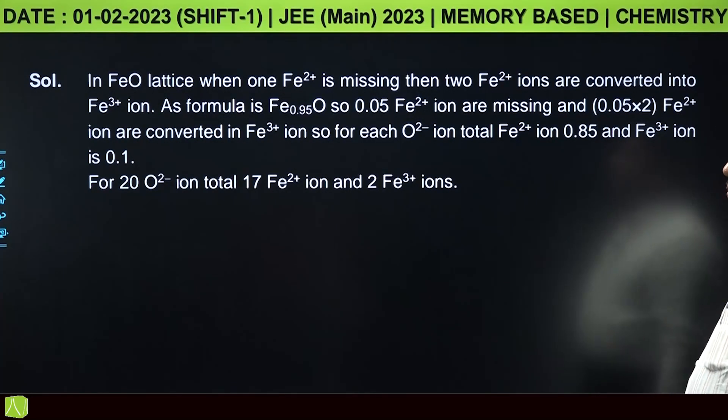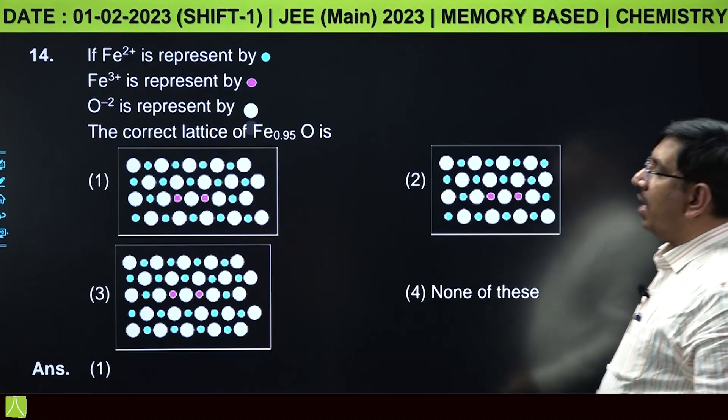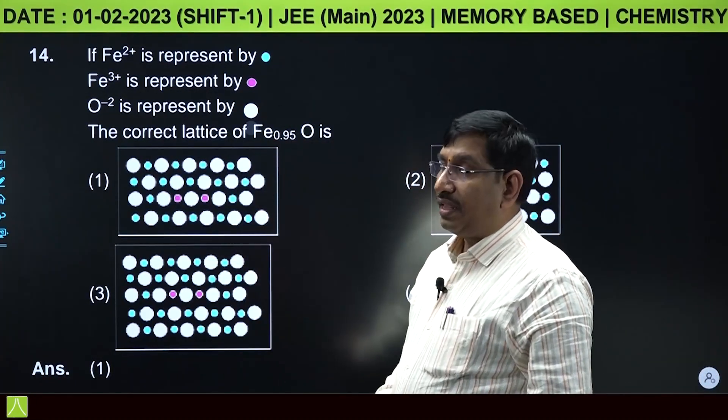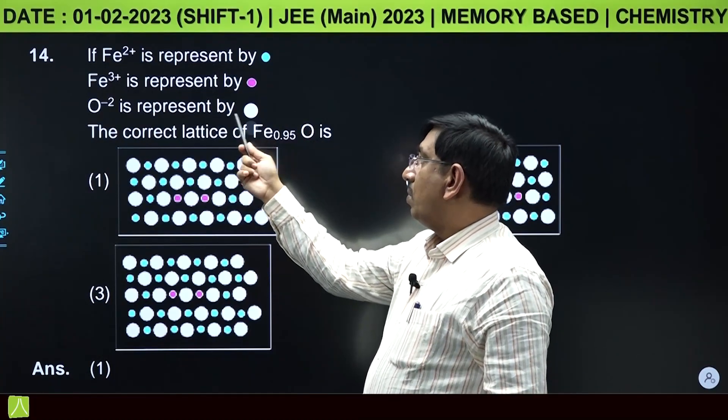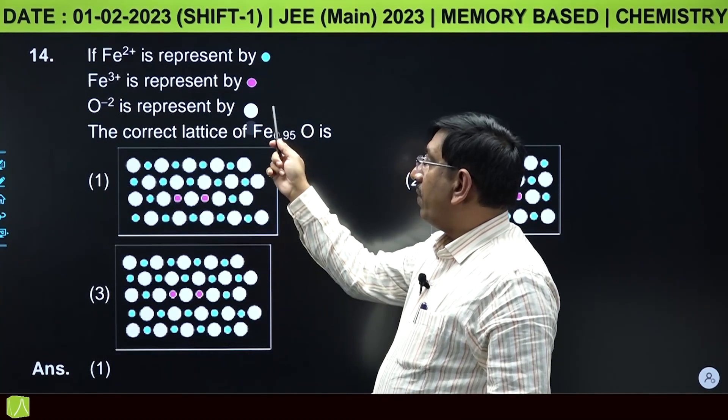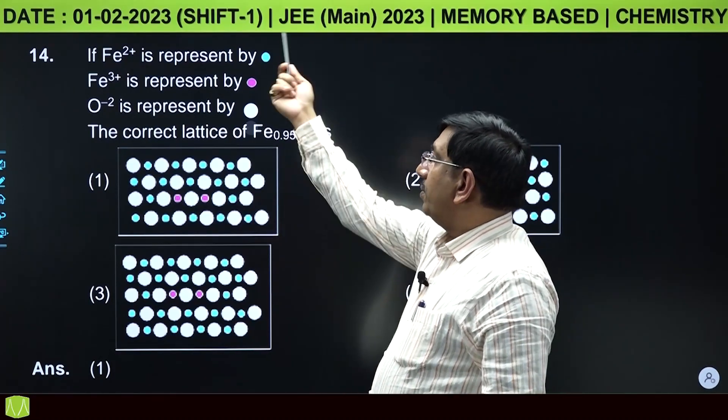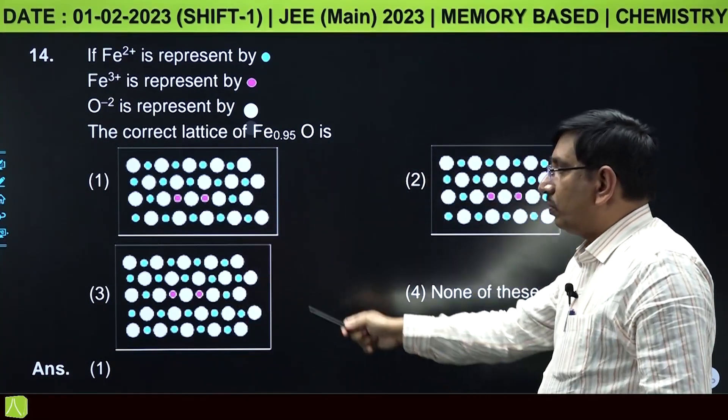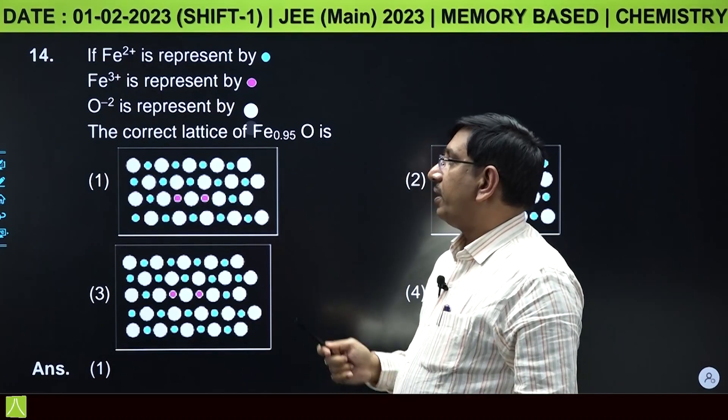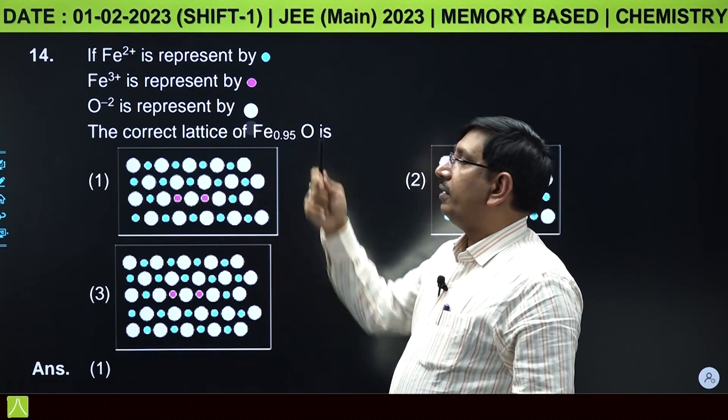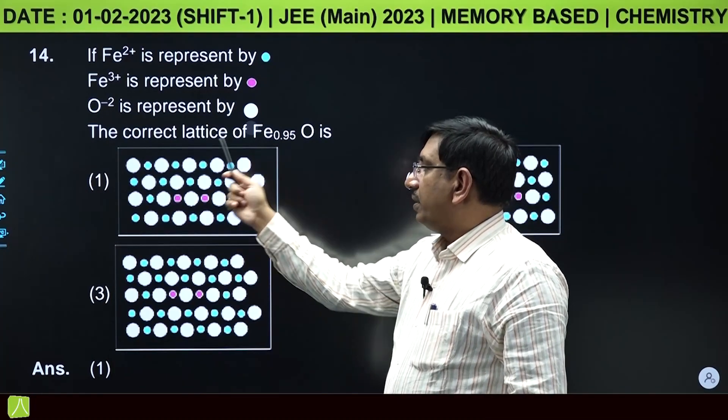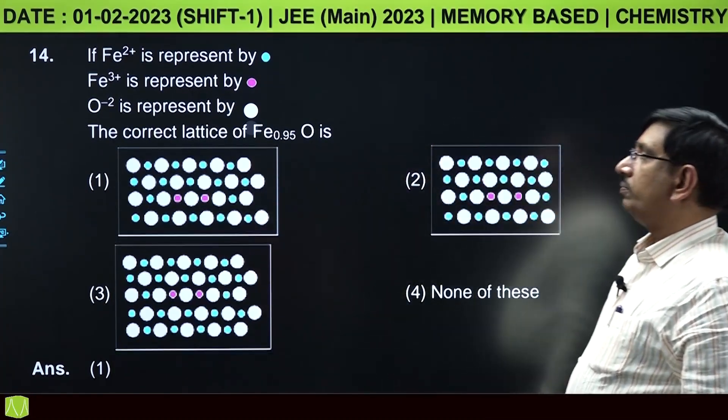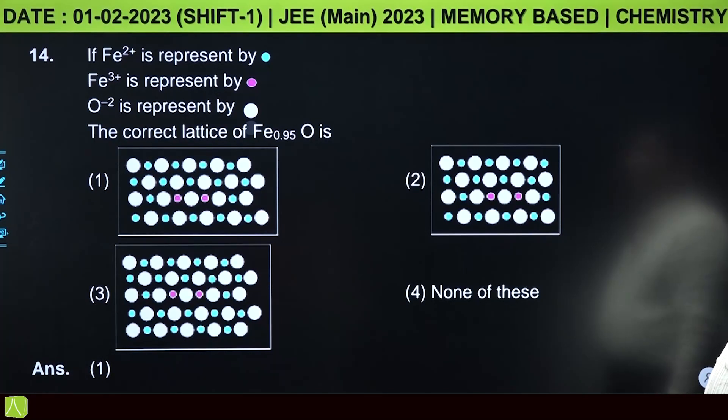You have to check in the lattice: 20 white balls for O2-, 2 red balls for Fe3+, and 17 green balls for Fe2+. If you observe the first option, it will have 20 oxide ions, 2 Fe3+ ions, and 17 Fe2+ ions.